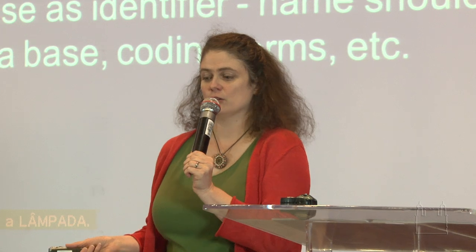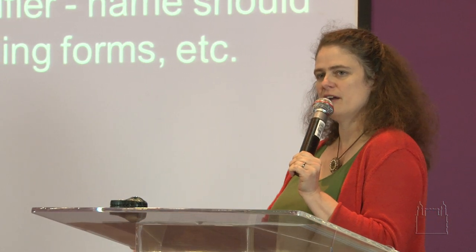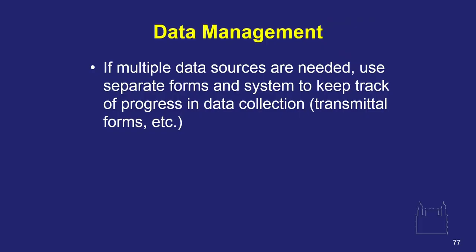Each participant should have their own study record, usually locked in some area when not in use. You need to have a code number for each participant. I recently looked at a protocol where the way they were developing code numbers, I could re-identify almost everybody in the study — that doesn't actually work. Remember, part of this is to protect privacy. You need to think about whether you're really accomplishing your goal — similar to randomization, are you really accomplishing what you're supposed to? If you need multiple data sources, you may need separate forms and even different databases. We have transmittal forms and a lot of different ways to make sure the data has gone and been entered correctly.